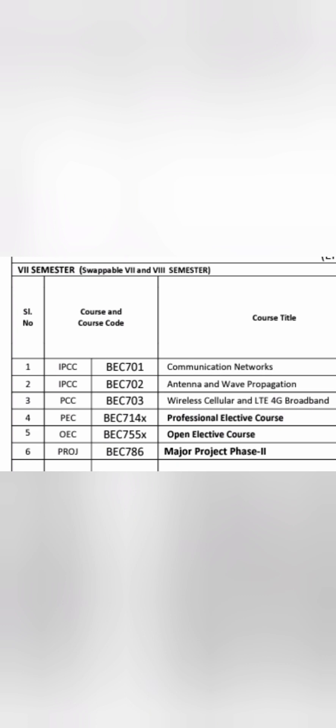Semester seven is when placements also start. The subjects include communicative networks, antenna and wave propagation, wireless cellular and LTE 4G broadband. There are three elective slots: one professional elective, one open elective, and project phase two - which is the continuation of the project from semester six. The professional elective options for semester seven are wireless sensor networks, 5G fundamentals, advanced VLSI, or soft computing techniques - you select one. Many times the combinations also cover computer-related courses alongside EC courses.